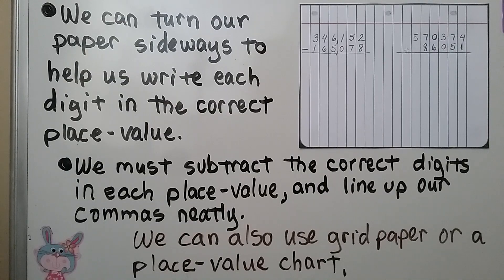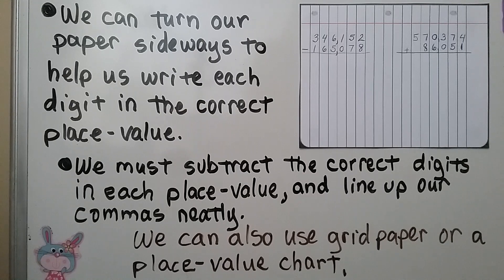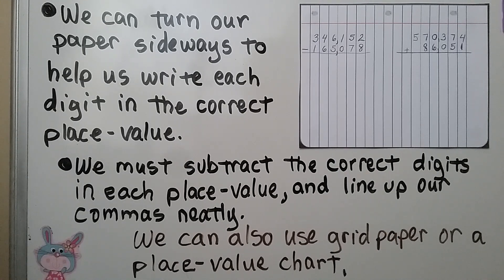As we said in the last video, we can turn our paper sideways to help us write each digit in the correct place value. We must subtract the correct digits in each place value and line up our commas neatly. We can also use grid paper or a place value chart.